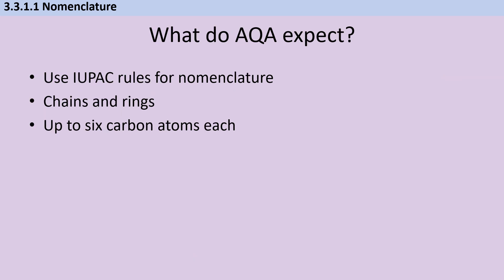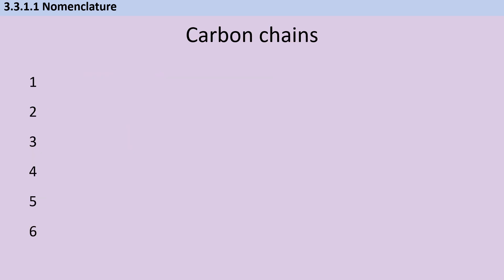Nomenclature at GCSE was restricted to the first four alkanes and the first four alkenes and so on. Similarly, there are limits on what AQA can expect you to know. The specification talks about using the IUPAC rules for nomenclature, restricted to carbon chains and carbon rings with up to six carbon atoms in each. That doesn't mean they can't ask you about a molecule with more carbons — it just means if they do, they'll give you a clue for what the prefix is. So you absolutely have to know one to six, and one to five should be familiar from GCSE.